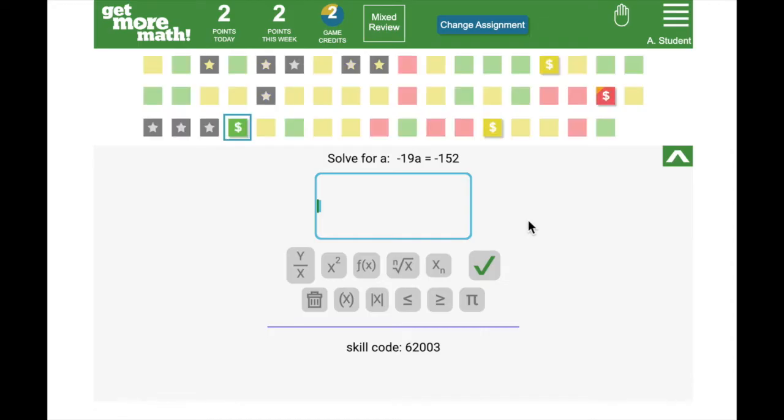You can see that some of the skills have dollar signs on them while others do not. Dollar sign skills are ones that Get More Math thinks are best for you to work on right now. Maybe they're brand new, maybe you haven't done them in a while, or maybe you often make mistakes on them. As a reminder, if a skill has a dollar sign that means that you can earn a point by answering that question correctly on the first try.